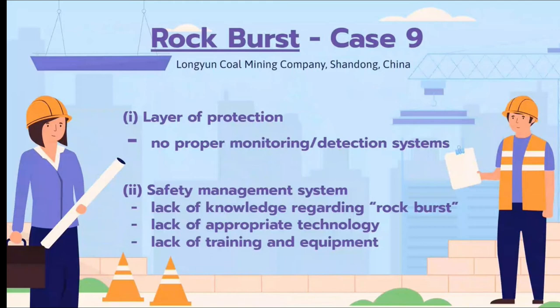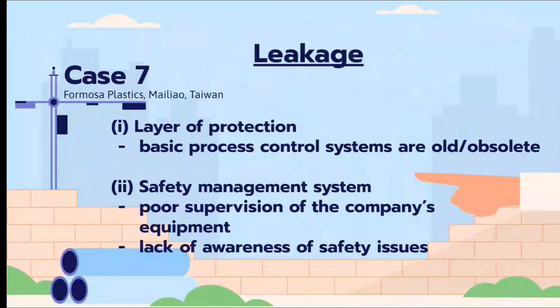As for Case 7, it was an explosion incident due to a seal leak. In terms of layer of protection, basic process controls were all obsolete. The safety management system failure was due to poor supervision of company equipment and lack of awareness of safety issues.